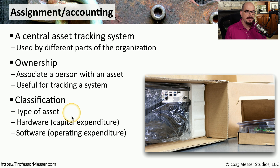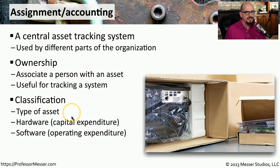Our asset tracking system will allow us to designate the type of device — we can call it a laptop, a desktop, a mobile device, or any other type of system. We also need to determine whether this is hardware or whether this is software. This not only allows us to recognize what type of asset this might be, but it also allows us to understand the tax liability for these different types.